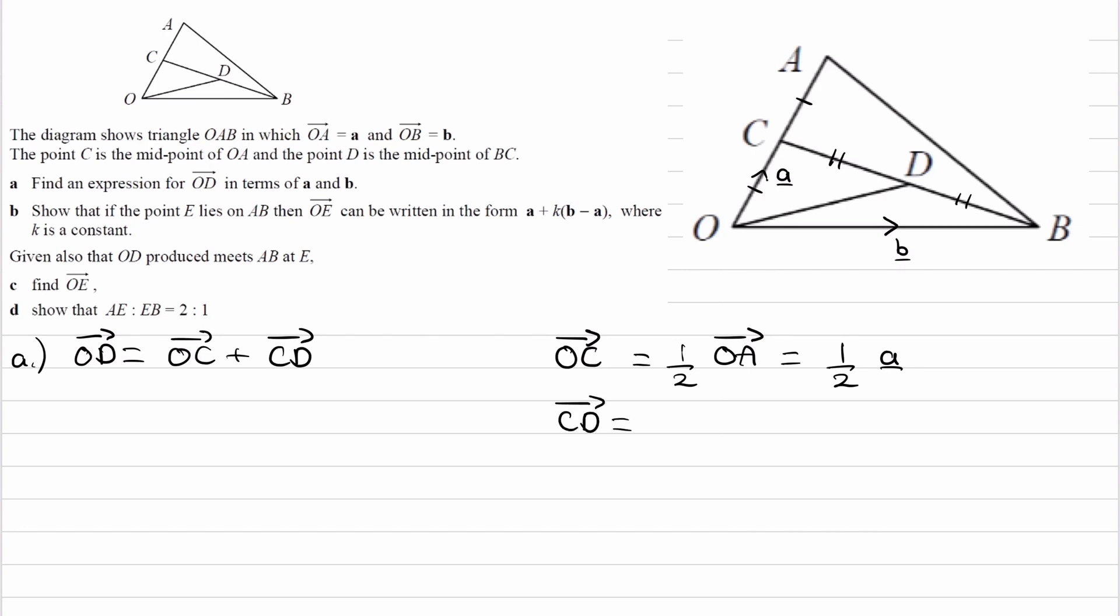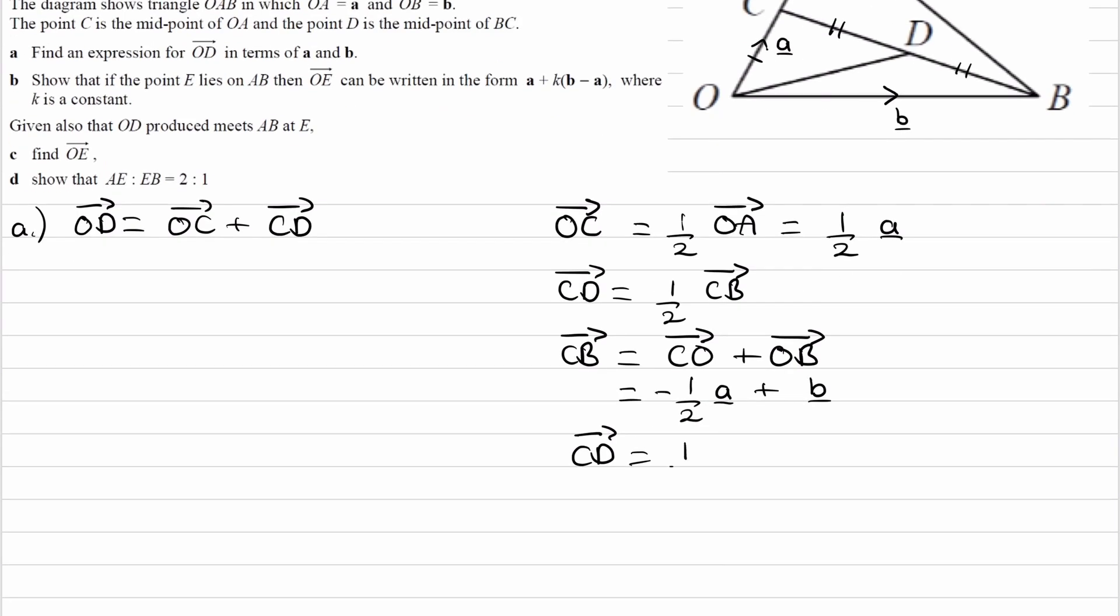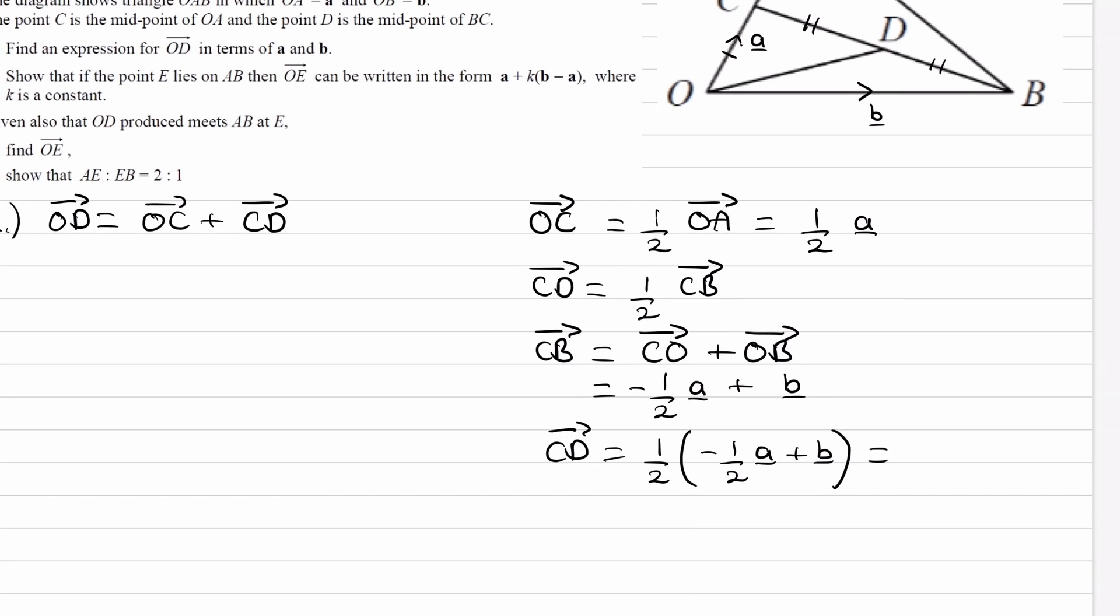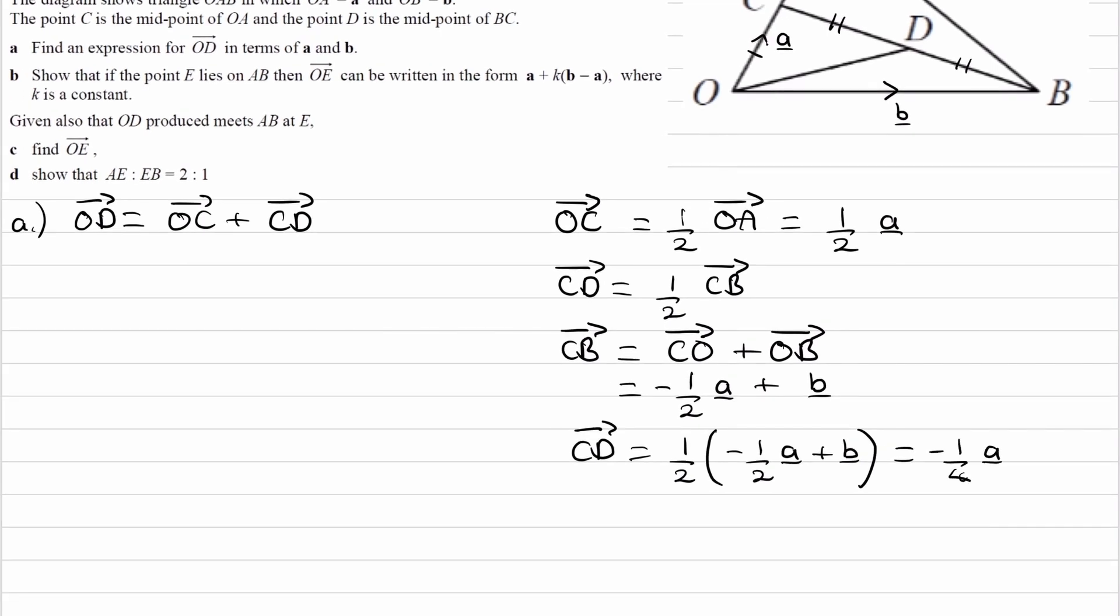For CD, that's the same thing as a half of CB. To work out what CB is, we can go from C to O, and then from O to B. To get CO, that's just the negative of OC. So this will be minus a half A. And then OB is just B. So therefore, CD is then going to be a half of minus a half A plus B. So that's just combining this and this together. And that will then be equal to minus a quarter A plus a half B.